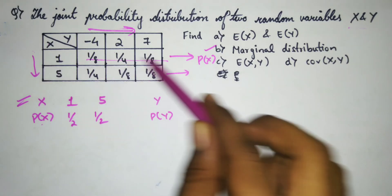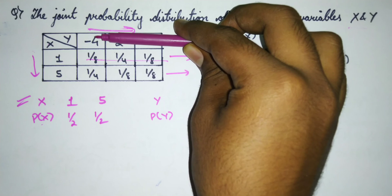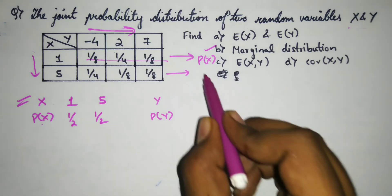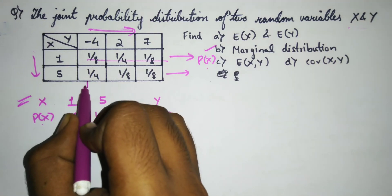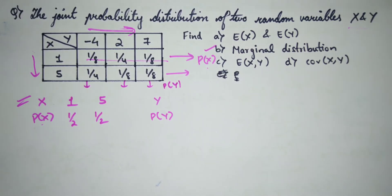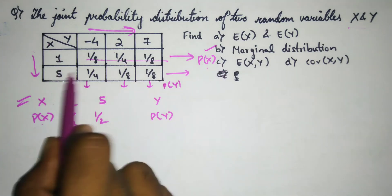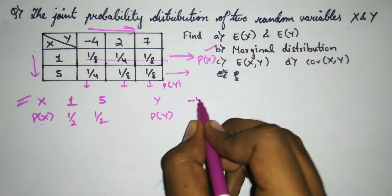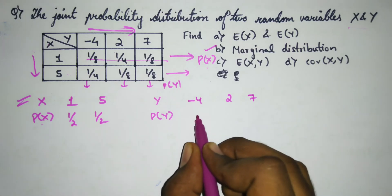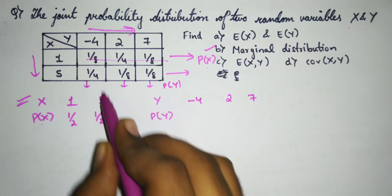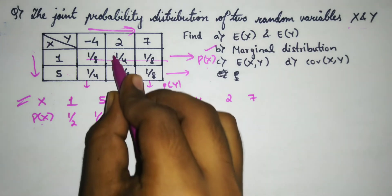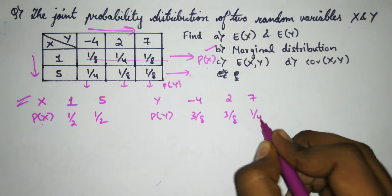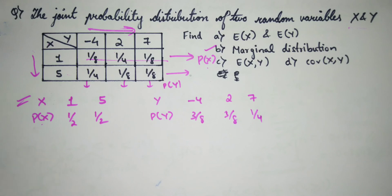Since Y values are in the row direction, we need to add the columns. For P(Y = -4): 1/8 + 1/4 = 3/8. For P(Y = 2): 1/4 + 1/8 = 3/8. For P(Y = 7): 1/8 + 1/8 = 1/4. So we have the marginal distribution tables for both X and Y.